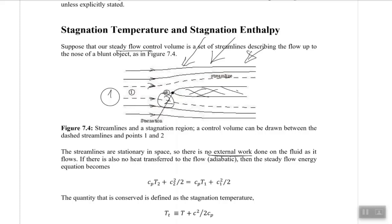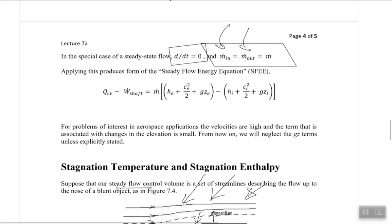Also, there is no heat transfer into or out of this system — the object is not releasing heat to the system and it is not receiving heat either. So there are two conditions: there is no external work done, meaning the work component is zero, and there is no heat transfer, meaning the heat transfer component is zero as well.